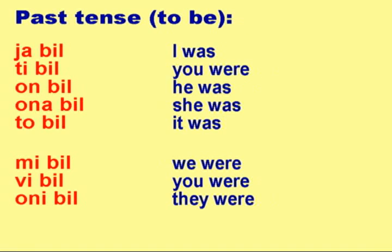Past tense — To be: YA BIL, TI BIL, ON BIL, ONA BIL, TO BIL, MI BIL, VI BIL, ONI BIL.